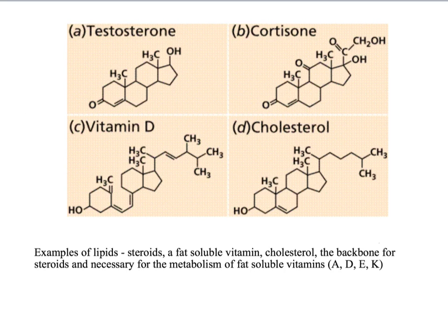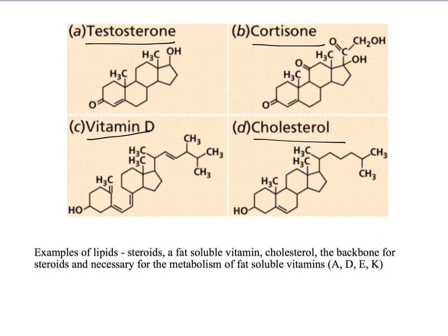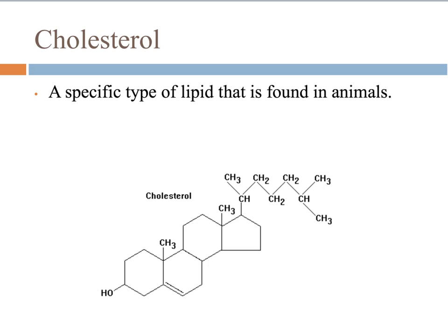Different examples of steroids include testosterone, cortisone, different vitamins, and cholesterol. It's necessary that we have these in our bodies and that they're able to be metabolized. Even though we've talked about them in a negative way, they're also very positive and our bodies can't function properly without them. Cholesterol itself has a bad reputation — we hear about cholesterol buildup and plaque buildup — but it's a naturally occurring lipid found in animals, and our body needs it.